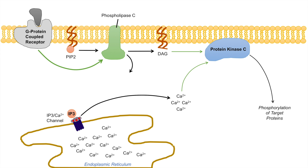To quickly recap: in this pathway, the extracellular ligand represents the first messenger and binds to the G-protein coupled receptor. PIP2 becomes cleaved into two second messengers — IP3 and DAG. Calcium is another second messenger, released from the endoplasmic reticulum. DAG and calcium together lead to the activation of protein kinase C, which leads to phosphorylation of target proteins — this is the cellular response as part of this pathway.